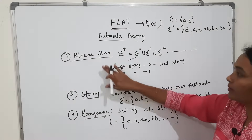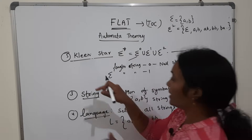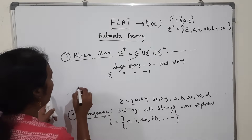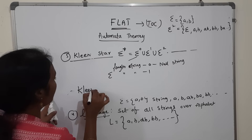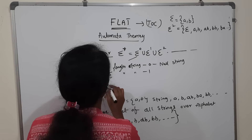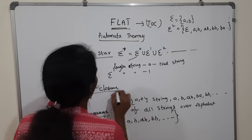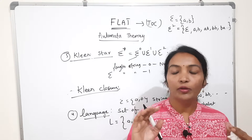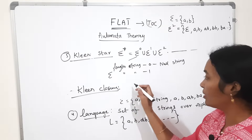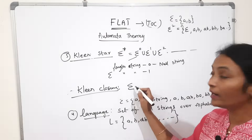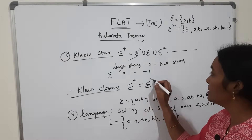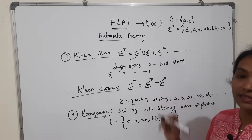Next is Kleene Closure, also called Plus Closure. It is denoted with sigma plus. It is nothing but sigma star minus sigma zero — meaning all strings except the null string or empty string.